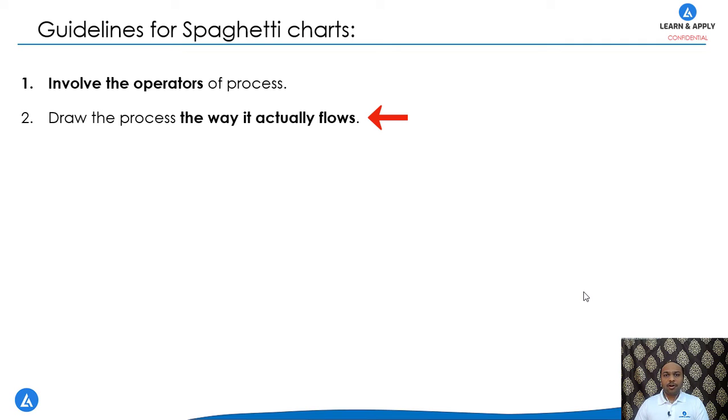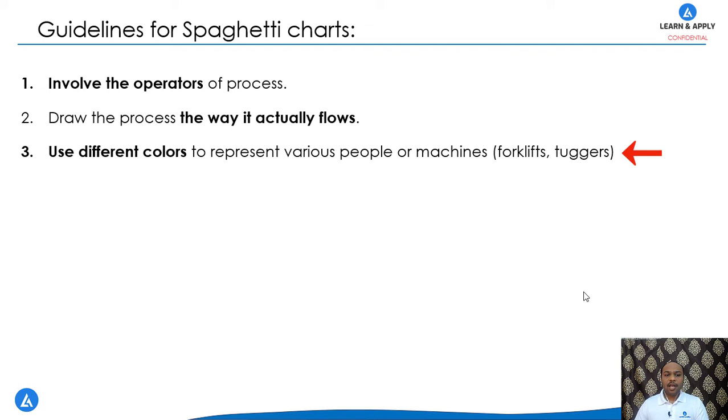Please avoid the manipulations in drawing the spaghetti diagram because it is for the improvement of the process flow. The third guideline is, use different colors to represent the various people or machines. For example, if you want to indicate the forklifts or the operator A, operator B, then we can use the different colors for them.